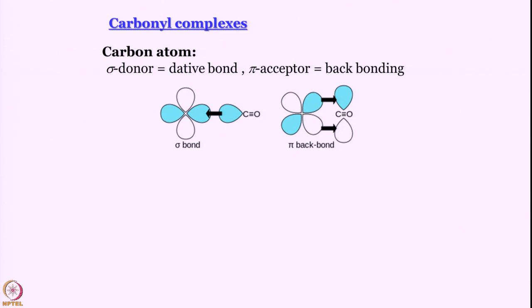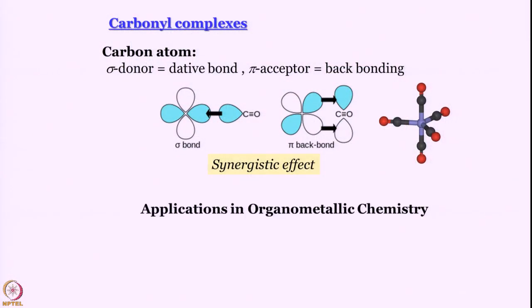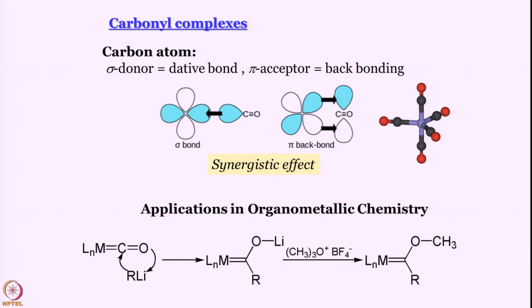Why does that happen? Why is it that it is carbon atom and not oxygen atom that likes to donate the electron in a sigma fashion? And why is it that it can sustain backbonding? And it is very important also because carbonyl complexes do have lots of application in organometallic chemistry.